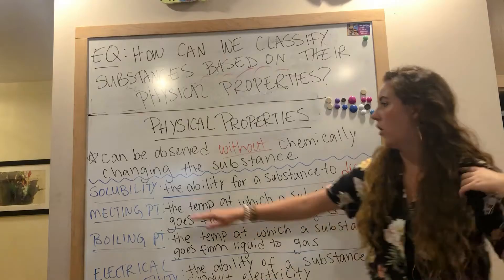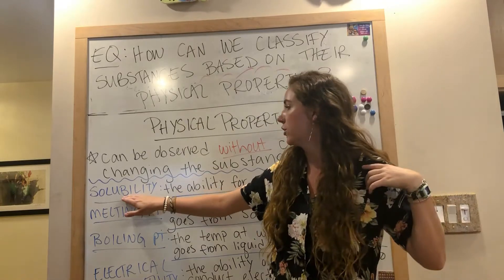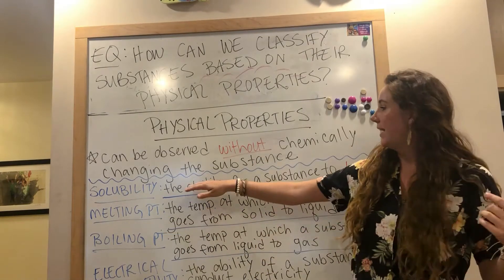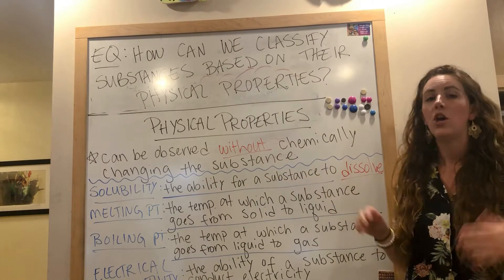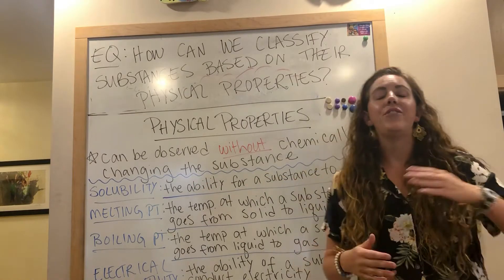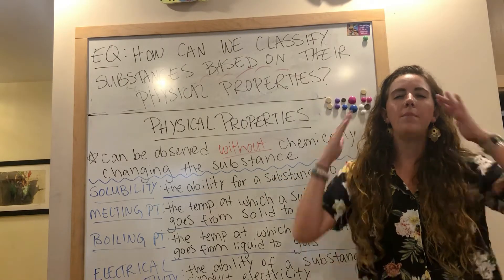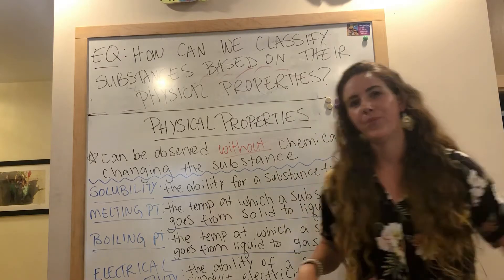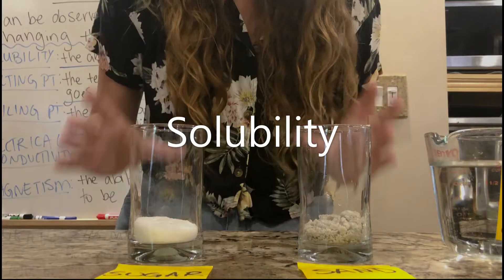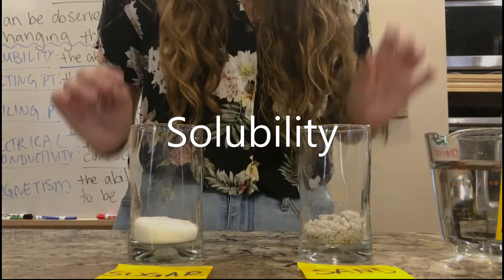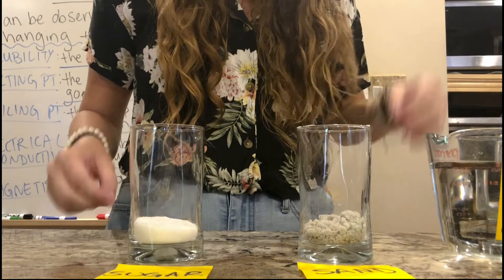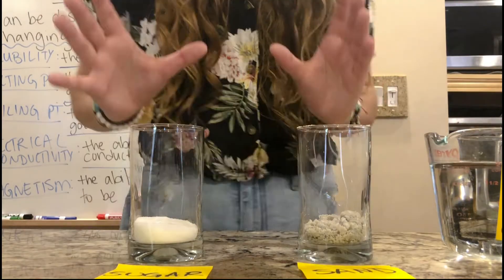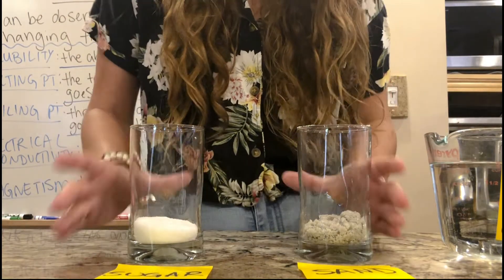First I want to show you a demonstration on the physical property called solubility. Solubility is simply the ability for a substance to dissolve. If you don't know what it means for a substance to dissolve, I'm going to show you right now. Solubility is defined as the ability for a substance to dissolve.